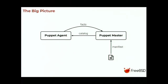The catalog is sent back to the agent. The agent will apply this catalog — it checks if its current state matches the expected state and corrects things if there are problems. After this, the Puppet agent sends back a report to the Puppet master — for example, reporting that the Apache service was stopped but has now been started.